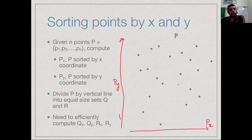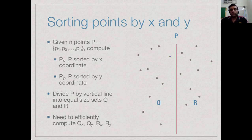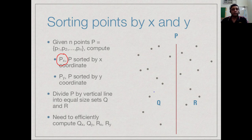The next step is the recursive call. Because we have Px sorted by x coordinate, we know the line we need to draw is the one that separates Px into two equal parts. We go to the midpoint of Px and draw a line at the x coordinate separating the midpoint from the next point. The position of this line is fixed once we know Px — we just look for the median x value and draw a line there, giving two equal halves.